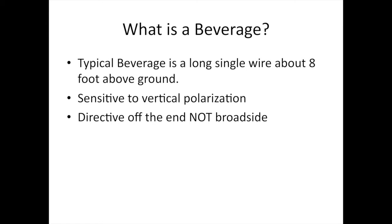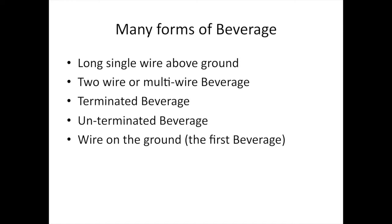Now what is a beverage? A typical beverage is a long single wire about eight feet above the ground. It's sensitive to vertical polarization and directed off the end, not broadside. There are many forms of the beverage. It can be a long single wire above ground, two wires or multi wires above ground, terminated with a resistor, unterminated, or even a simple wire just laying on the ground. As a matter of fact, I believe the first beverage was such an antenna.